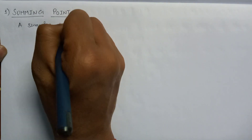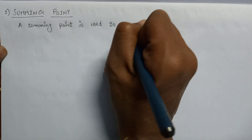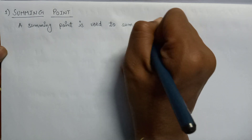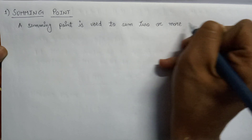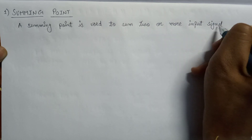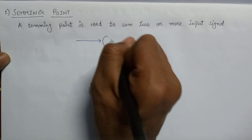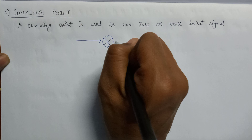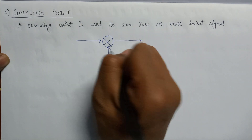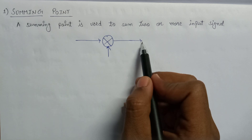A summing point is used to sum two or more input signals — that is the basic use of a summing point. The summing point is represented by a circular symbol. It is a two-input summing point: this is input 1, this is input 2, and here is the output that we get from this summing point.